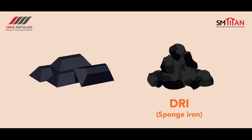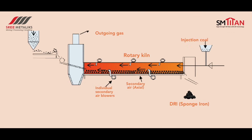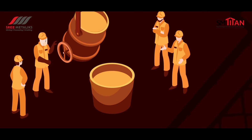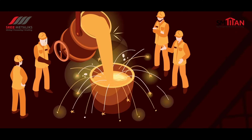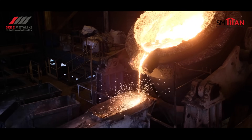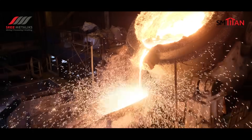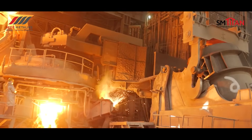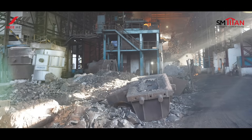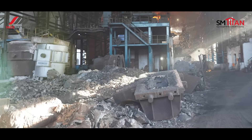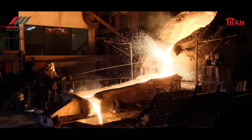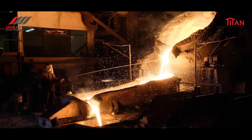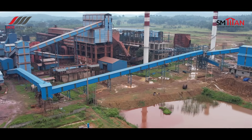The pig iron then meets direct reduced iron (DRI), or sponge iron, produced through the reduction of iron ore using a reducing gas and elemental carbon from non-coking coal. Our journey continues to the steel melting shop, where the pig iron and sponge iron undergo further refining inside the induction furnace. Electrical energy is used to further reduce and melt the sponge along with the pig iron and any high grade scrap available for recycling, ensuring the steel's quality and purity.